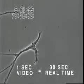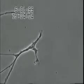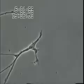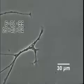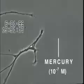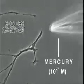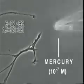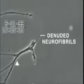In this experiment, neurons also isolated from snail brain tissue were grown in culture for several days, after which very low concentrations of mercury were added to the culture medium for 20 minutes. Over the next 30 minutes, the neurite membrane underwent rapid degeneration, leaving behind the denuded neurofibrils seen here.